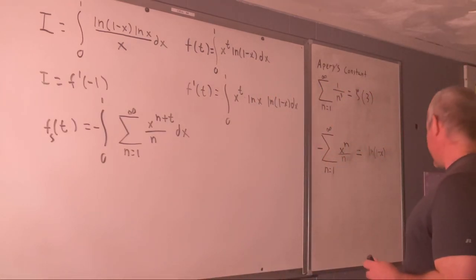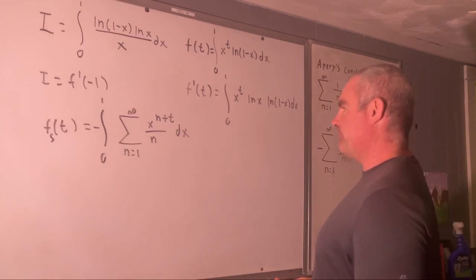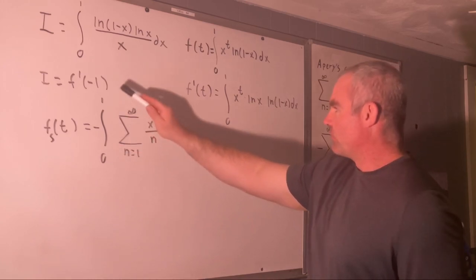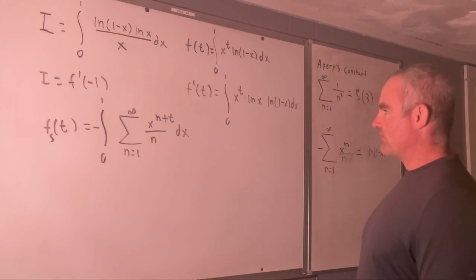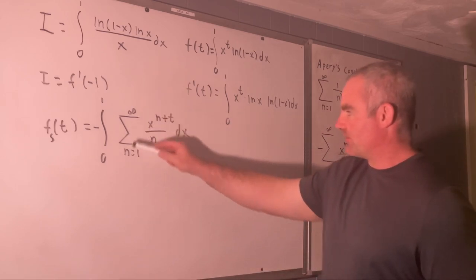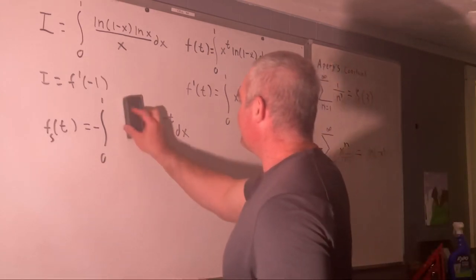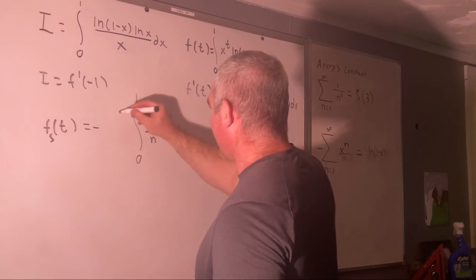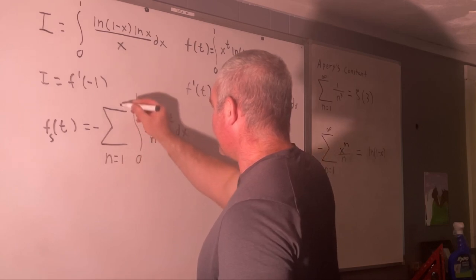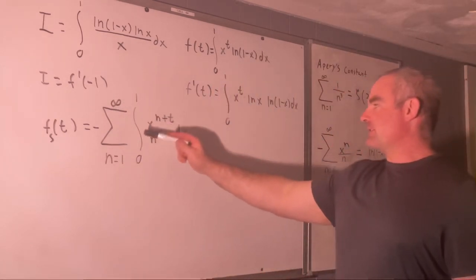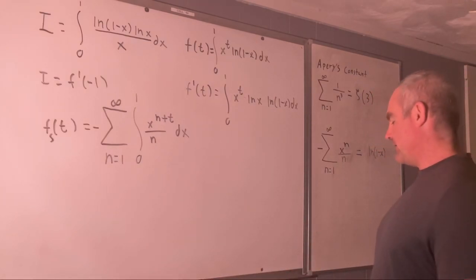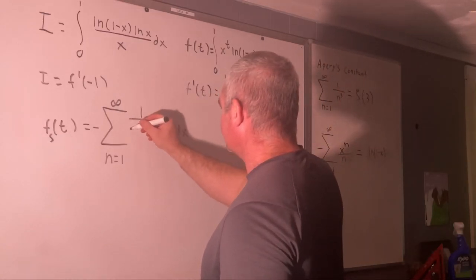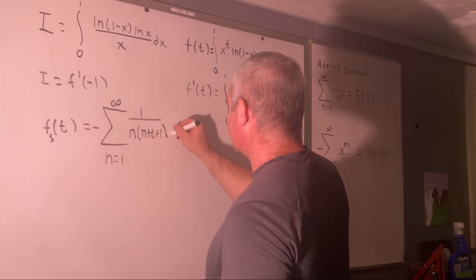There's not going to be any problems switching the bounds of integration and summation here. This thing is definitely integrable from zero to one, no problem, and the result definitely converges from N equals one to infinity. So, I'll just do this right now. So, this is the integral from zero to one summed from N equals one to infinity. Evaluating this integral will give us one over N times N plus T plus one.